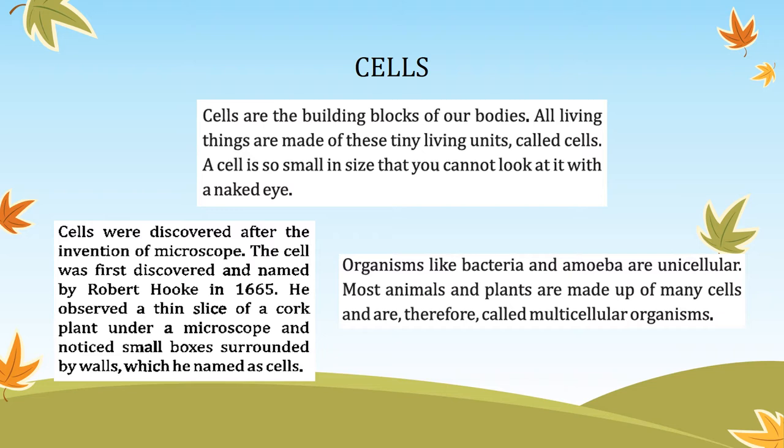All living bodies are made up of cells. On the basis of cells, living organisms are categorized as unicellular and multicellular. Unicellular — 'uni' means one — these organisms consist of only one cell, just like bacteria and amoeba, whose bodies contain only one cell. They are called unicellular organisms.